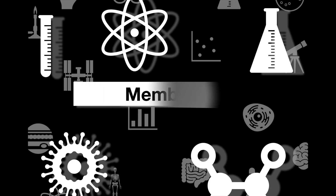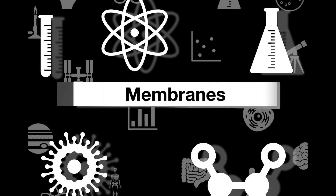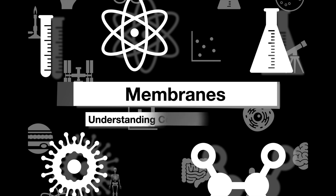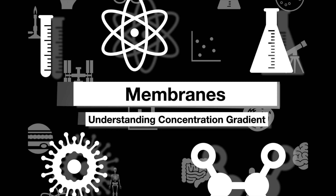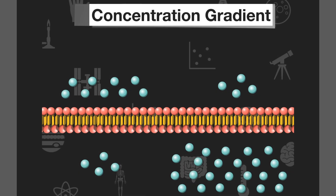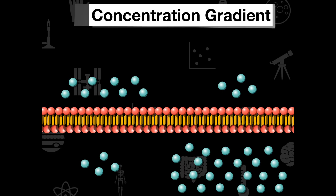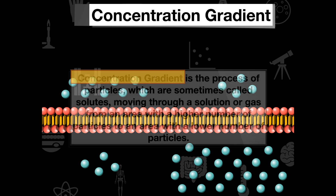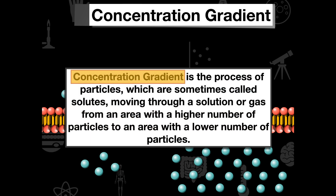This is our next video on membranes, and what we want to cover today is understanding what the concentration gradient is in more detail. We briefly touched on concentration gradient in the last video, but let's make sure we go over the definition. It is the process of particles moving from an area where there is a higher number of them to an area where there is a lower number of them.